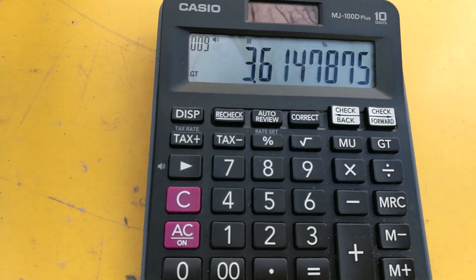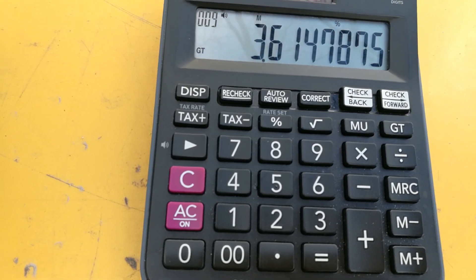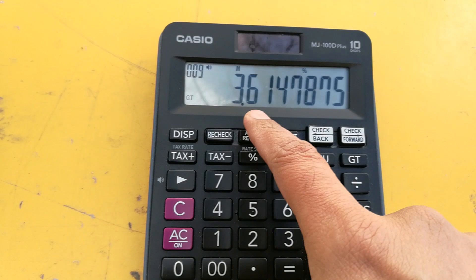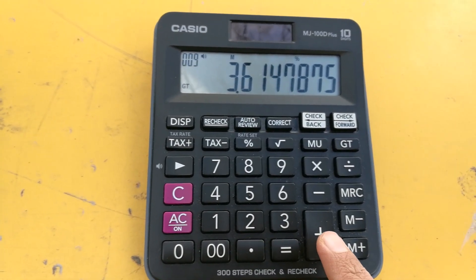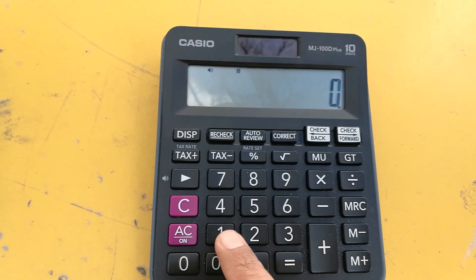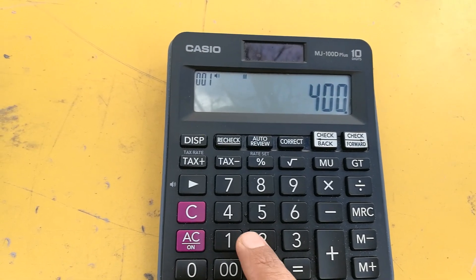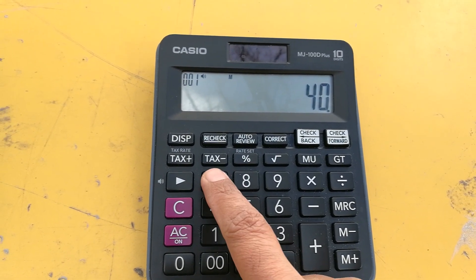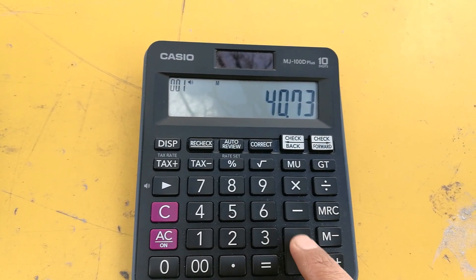It comes to 3.61, so 3.61 cents. This is the sales tax percent. Now what we will do is add this. 40.73 was our total and we want to calculate the sales tax.